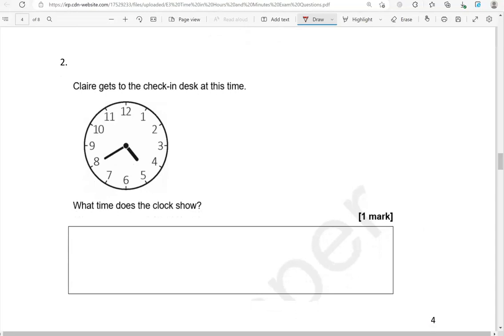Claire gets to the check-in desk at this time. What time does the clock show? Looking at the short hand, that is after 4 but it's not at 5 yet, so that's why we're going to say 4 and minutes. We've got 5, 10, 15, 20, 25, 30, 35, 40. So it's 4:40.